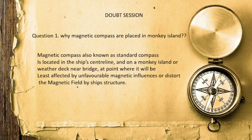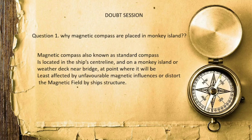Why is the magnetic compass placed in Monkey Island? The magnetic compass, also known as the standard compass, is located on the ship's central line. It is placed in Monkey Island because the ship's body — including the hull — is fully made of metal, and magnetic influences from the ship's metal body would distract and deflect the compass reading. Placing it in Monkey Island reduces that deflection rate.